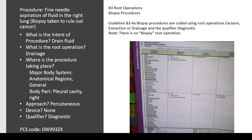Guideline B3.4a: biopsy procedures are coded using root operations excision, extraction, or drainage with the qualifier diagnostic. This guideline exists because there is no biopsy root operation. Example: fine needle aspiration of fluid in the right lung, biopsy taken to rule out cancer. The intent is to drain fluid, so the root operation is drainage. This is a tricky one — when you are draining fluid, you're not actually going into the lung, so it's not part of the respiratory system. You are draining fluid from the pleural cavity on the right. The approach is percutaneous, device is none, qualifier is diagnostic. And there is your code.